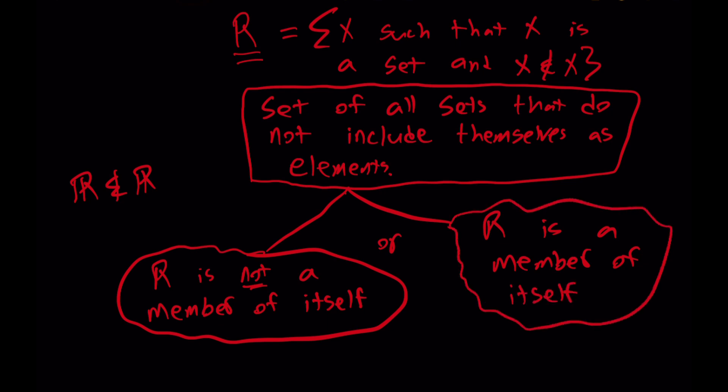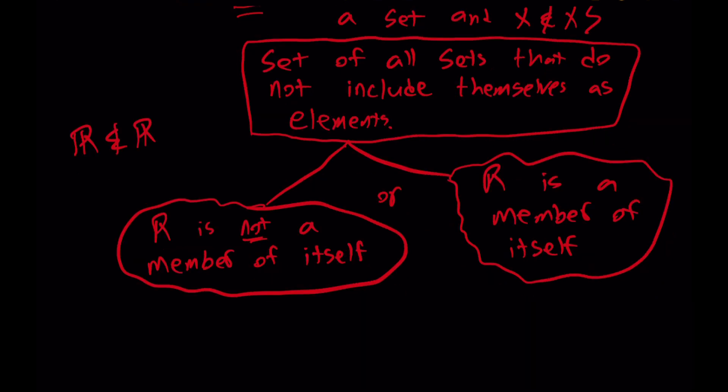But then think about the logic here. Is R an element of R? Because if it is, if it is true, then it is false. And if it is false, then it is true.